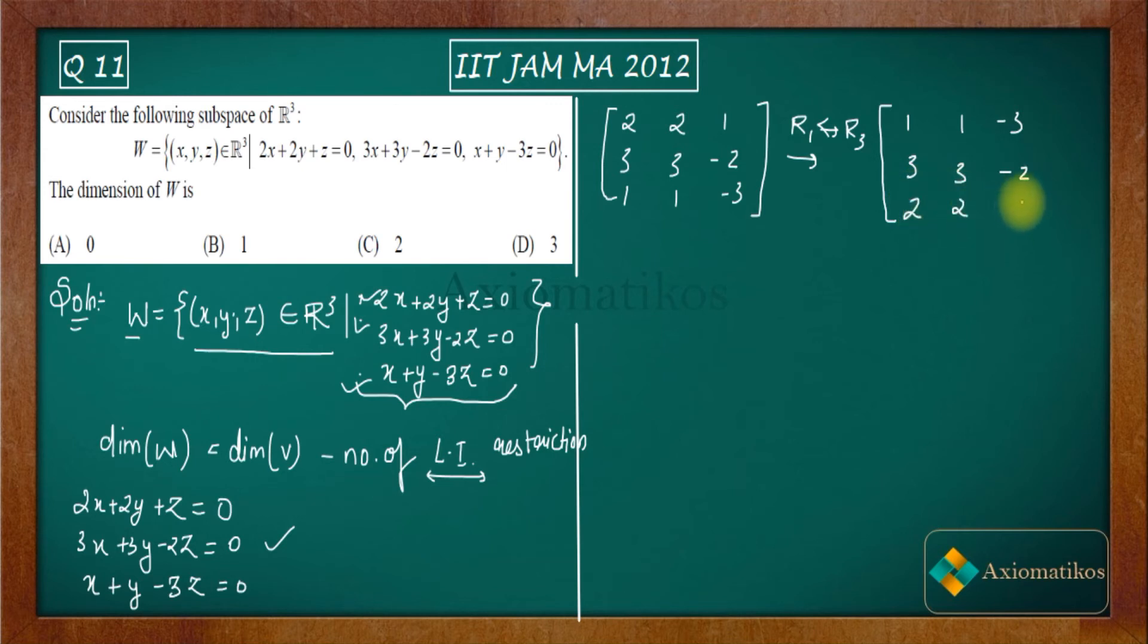Now just apply r3 → r3 - 2r1 and r2 → r2 - 3r1. So what you will get then? You will get 1, 1, -3; 0, 0... For this one, you are multiplying thrice, so 9, so you will get 7 over here. Then you will get 0, 0 over here.